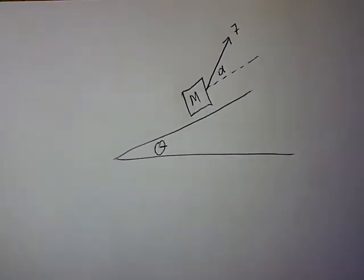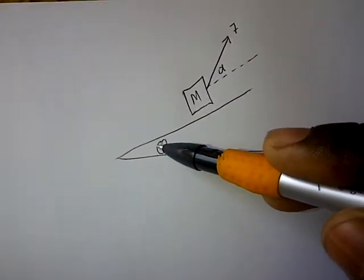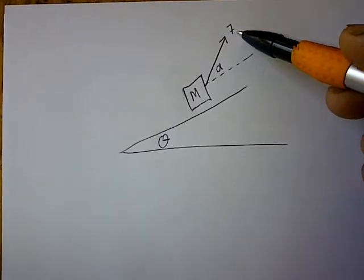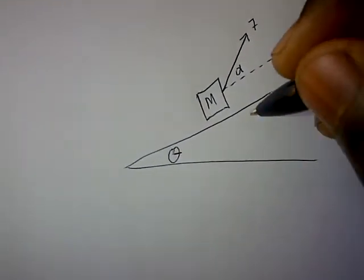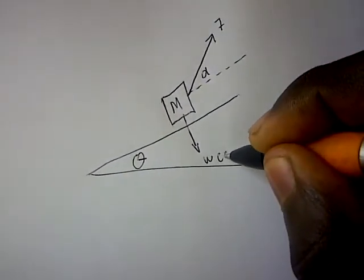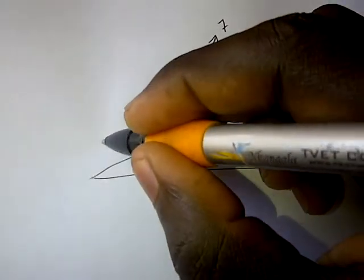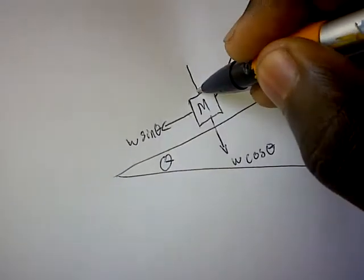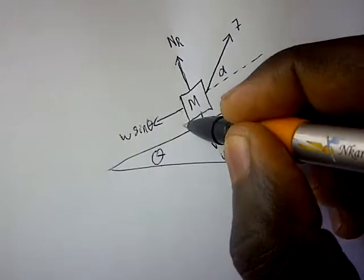Let's look at friction. Suppose we have a body of mass M rested on an inclined plane at an angle theta, and it is being pulled upwards by a force F at an angle of alpha. If we have a body at an inclined plane, it always has this force w·cosθ, and this force w·sinθ. We also have the normal reaction N.